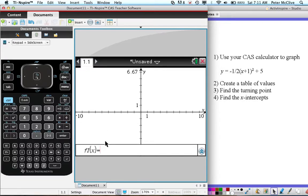You should see a page, and down the bottom in the entry line it should say f1 of x, which is another way of saying y. We're going to enter the function which is minus one-half brackets x plus 1 squared plus 5.